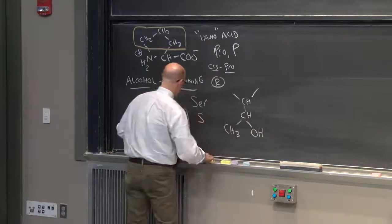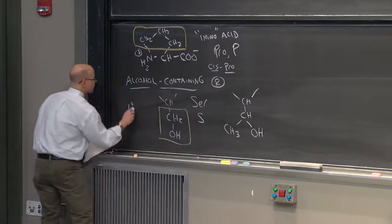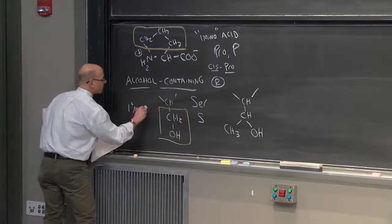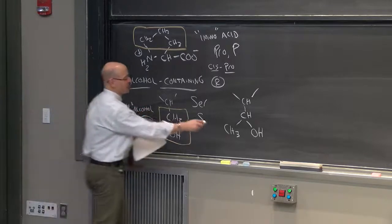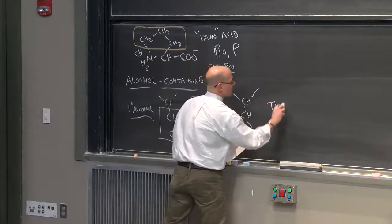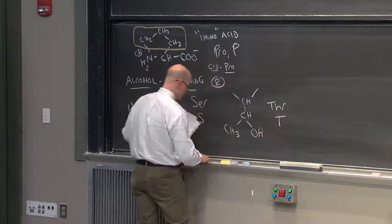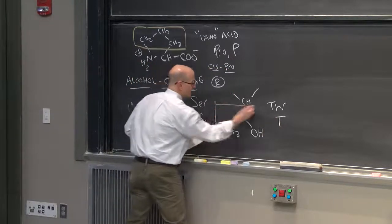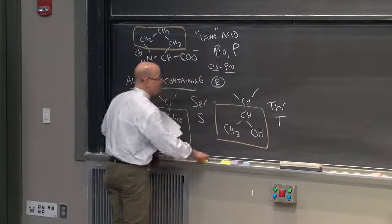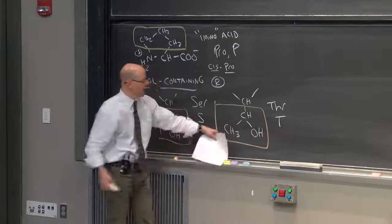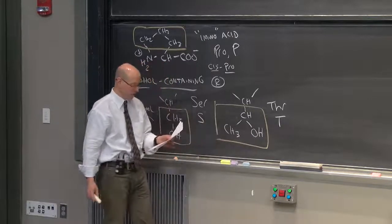Now I'd like you to notice that serine is a primary alcohol. This amino acid goes by the name threonine, single letter code T. This is its side chain. And you'll notice that this beta carbon is branched and it has a methyl group and a hydroxyl group.